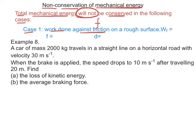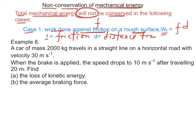On a rough surface, the work done against friction is equal to Fd, where F is the frictional force and d is the distance traveled by the body.